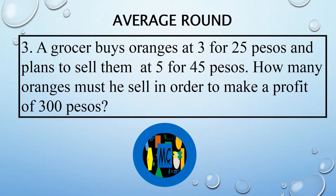A grocer buys oranges at 3 for 25 pesos, and plans to sell them at 5 for 45 pesos. How many oranges must he sell in order to make up 300 pesos?